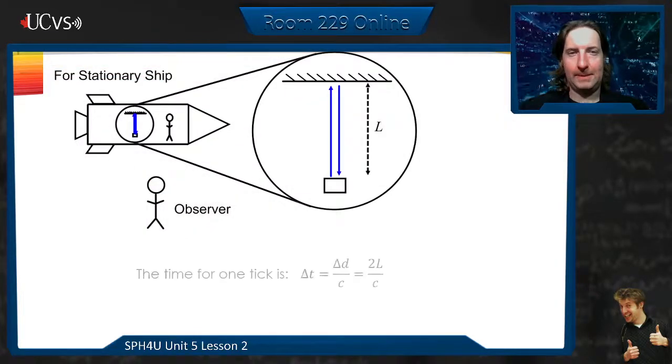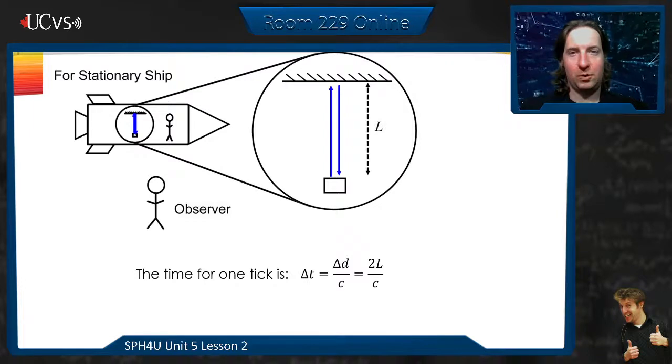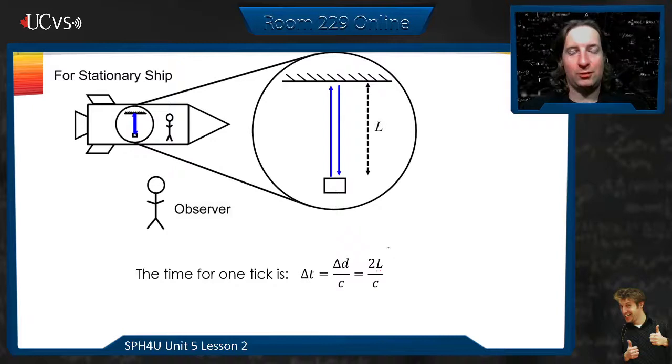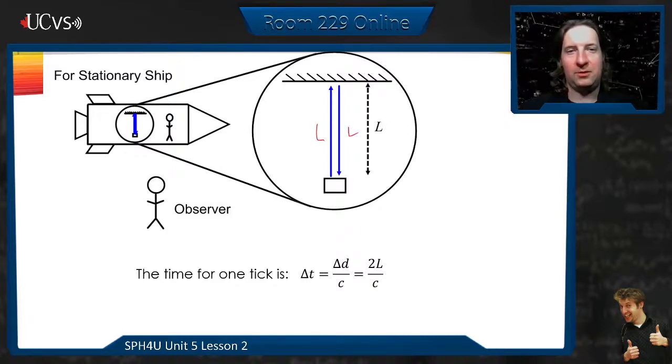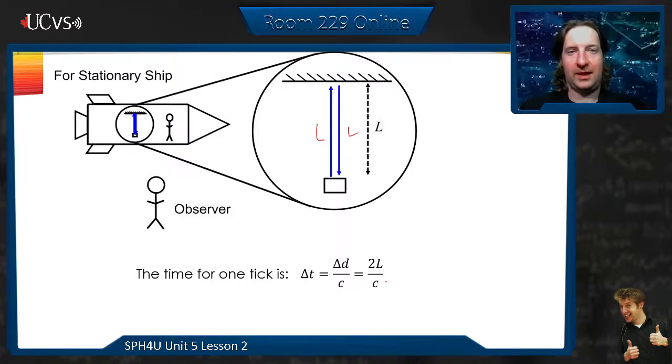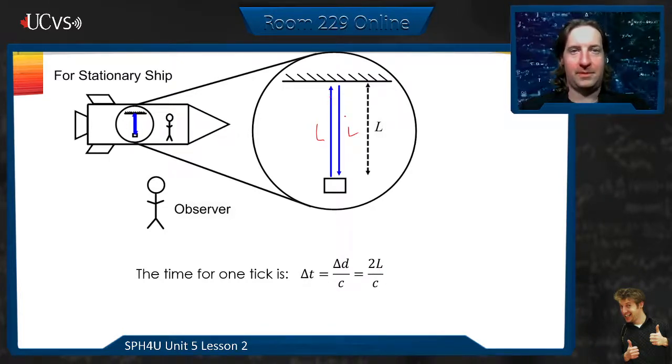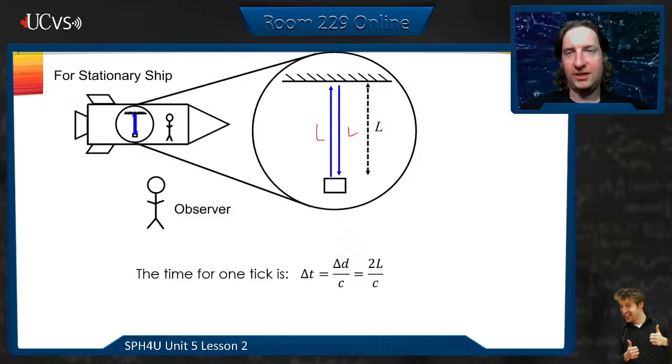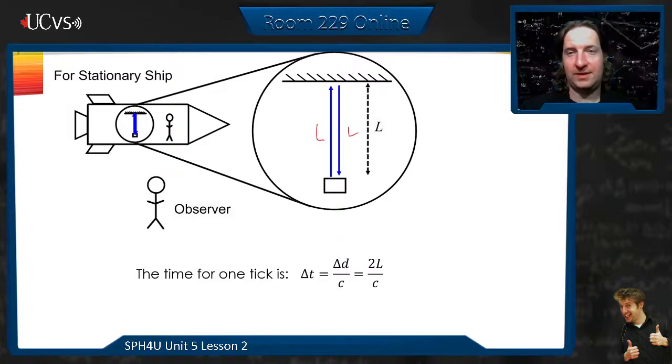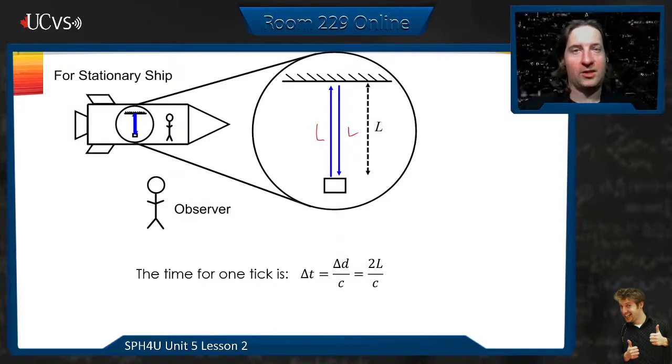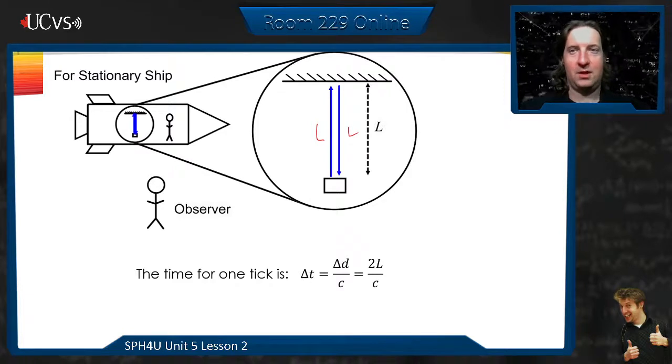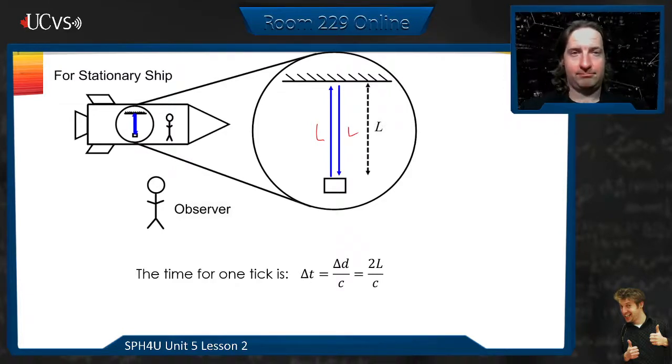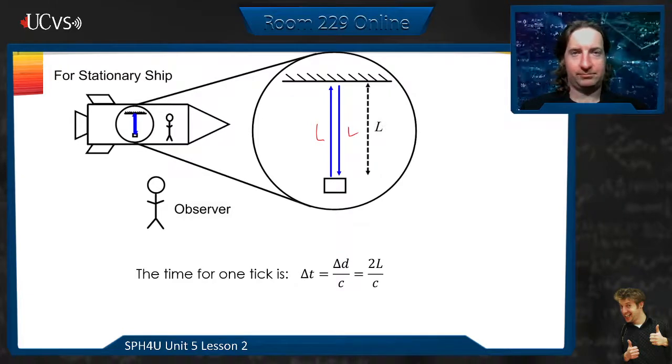So the ship that's not moving, we already just showed that the time it takes for one tick is going to be, oh, so I had L. So it's going to go up and down, so it's going to have to go 2L. So the distance it takes is going to go L up, L down, so 2L, divided by the speed of light, which is the speed at which the photon goes up and comes back down. So that's our time. So the time that the observer inside the ship sees and the time that the observer outside the ship sees are the same. So the two objects which are at rest, no problem. Everything works out.